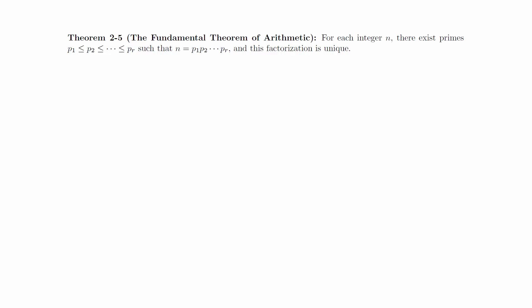Here's the formal statement of the main theorem for this section. The fundamental theorem of arithmetic. For each integer n, there exists an increasing list of primes p1 through pr, such that n is the product of these primes, and this factorization is unique.